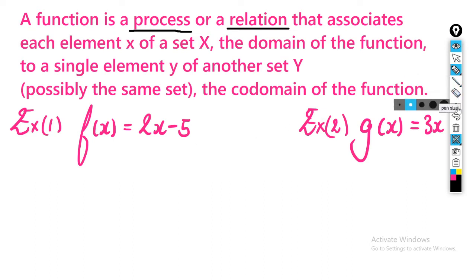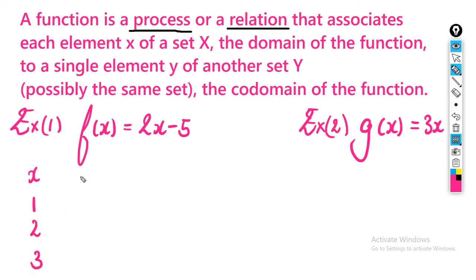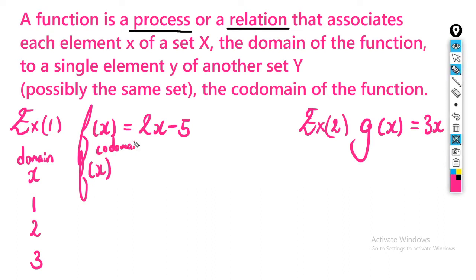Let me jump into examples. Here we have the function f(x) = 2x - 5, and we want to evaluate it for x = 1, 2, and 3. This set of inputs is the domain, and the results we find will be the co-domain.